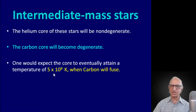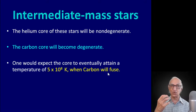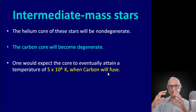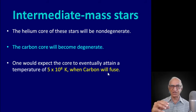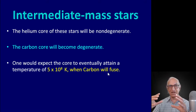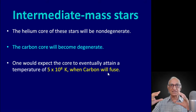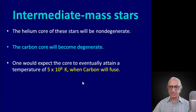Whereas the helium core was non-degenerate, the carbon core will be degenerate because it will contract to a very small radius, just as it did when a star like the Sun develops a degenerate carbon core when it became a red supergiant. One would expect the core to eventually attain a temperature of 500 million degrees when carbon nuclei can fuse to form oxygen and other heavy elements. How does it get hot? When the degenerate core contracts there will be no heating because pressure and temperature are unrelated for a degenerate Fermi gas. But you remember there is still an outside furnace — in fact there are two outside furnaces — where helium is still being converted to carbon, and surrounding that, another furnace where hydrogen is still being converted to helium. Therefore, by conduction, the degenerate carbon core will eventually heat up to 500 million degrees and carbon will fuse.